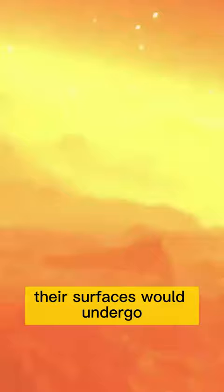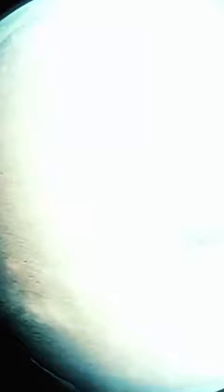If there were planets orbiting around the star, their surfaces would undergo enormous changes in a very short period of time. Perhaps one second ago, a planet was in a freezing cold world, but in the next moment, a violent flare would turn it into a blazing inferno.